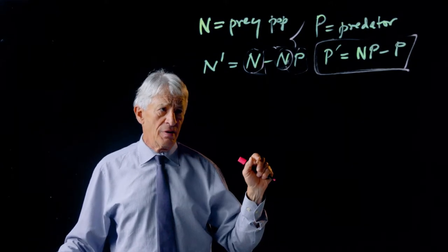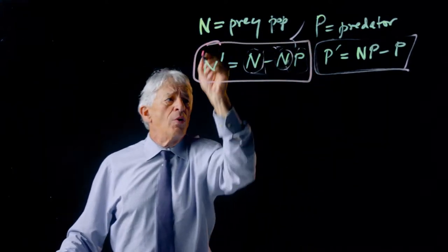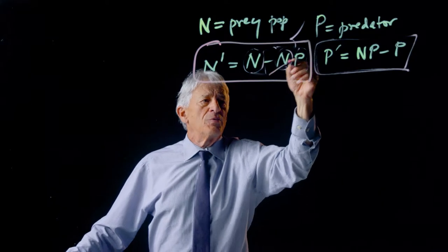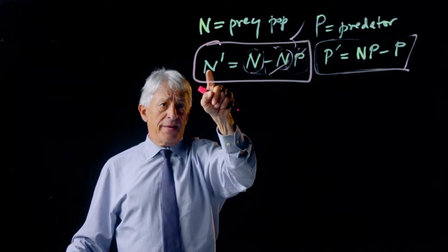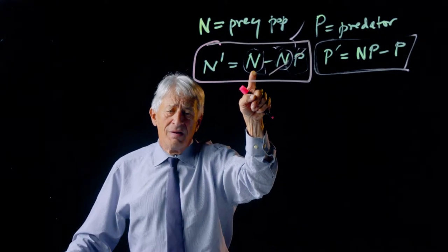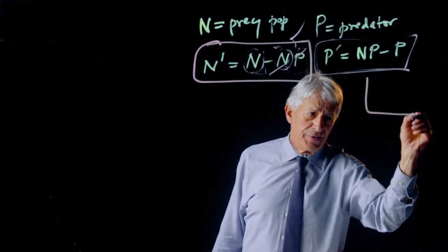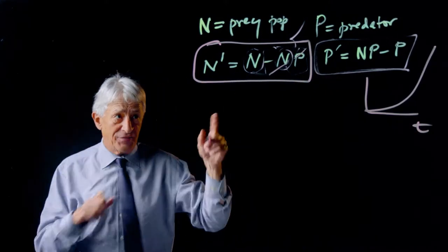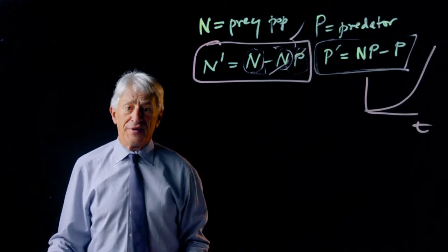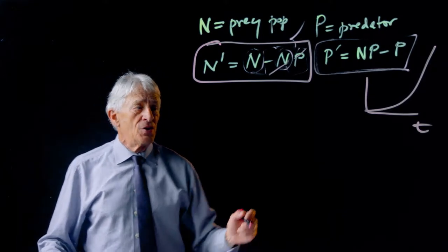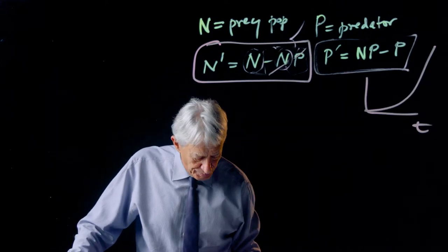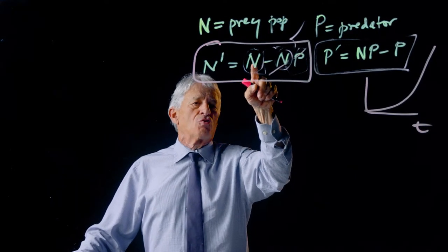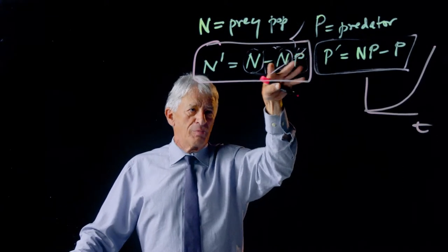So the first problem with this model is contained in the N prime equation because we have to ask the question, what happens if predator equals 0, P equals 0? Well, if P equals 0, that term drops out. We get N prime equals N. N prime equals N, as you know, is the differential equation for infinite exponential growth. And it predicts that if there are no predators, the prey will grow to infinity. So we need to have a saturating term that says that the prey cannot grow infinitely when the predator is 0.